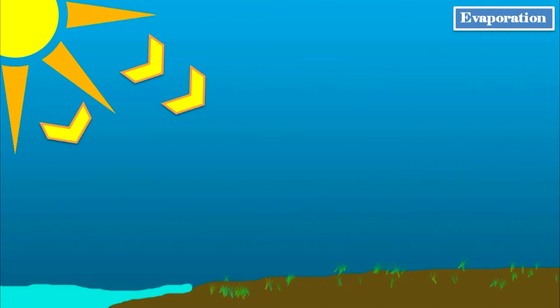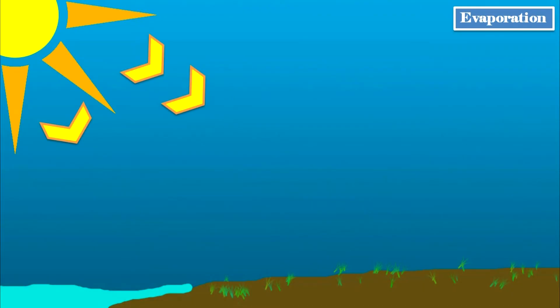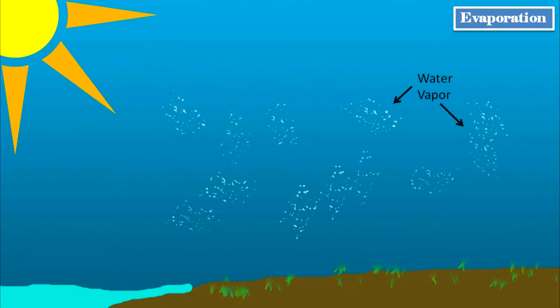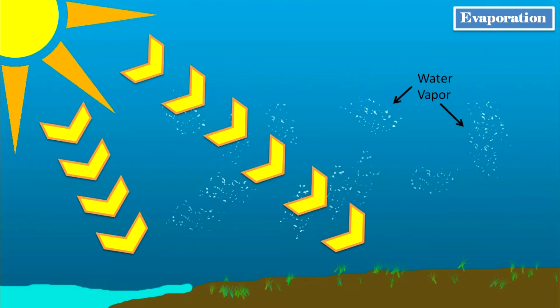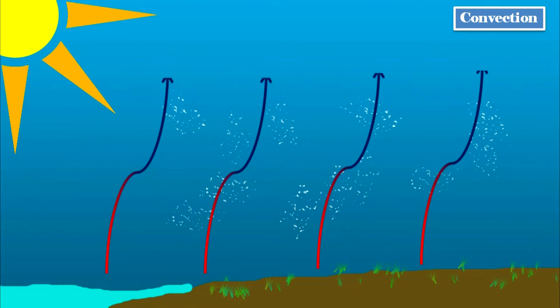First, evaporation. This is when water changes from its liquid form into an invisible gas called water vapor. This happens when the sun heats the water in the ocean, lakes, rivers, and even the ground. Just like when boiling water turns to steam, the water heated by the sun turns into an invisible vapor. The vapor then rises from the surface and into the atmosphere, just like steam rising from a boiling pot of water.